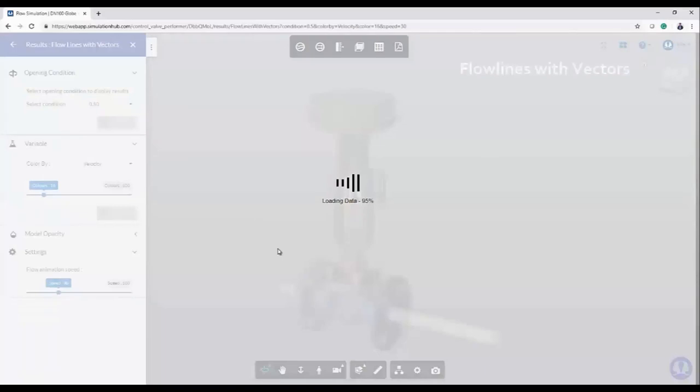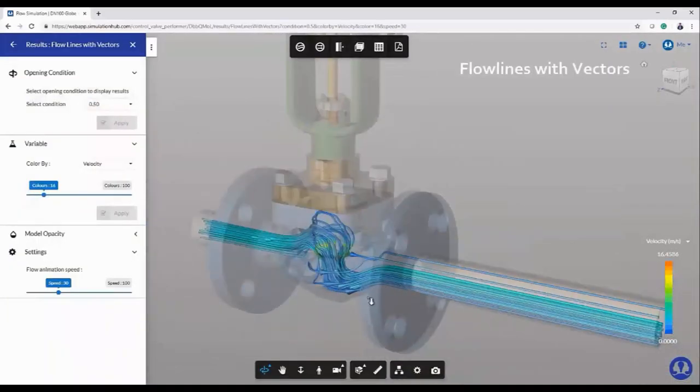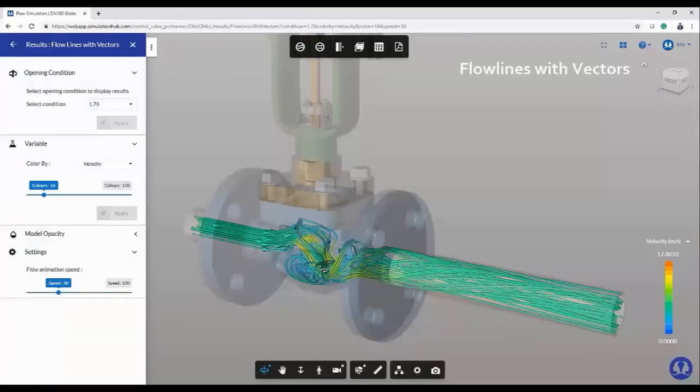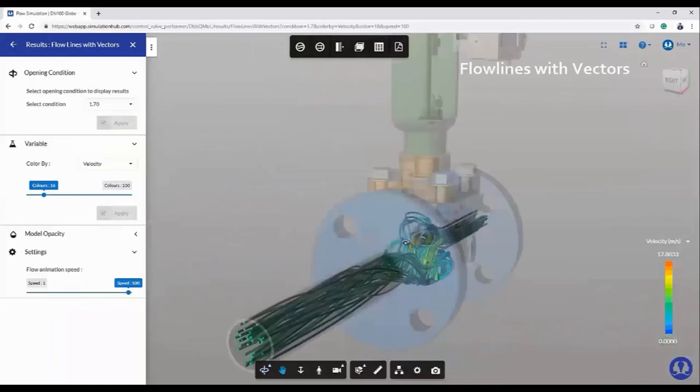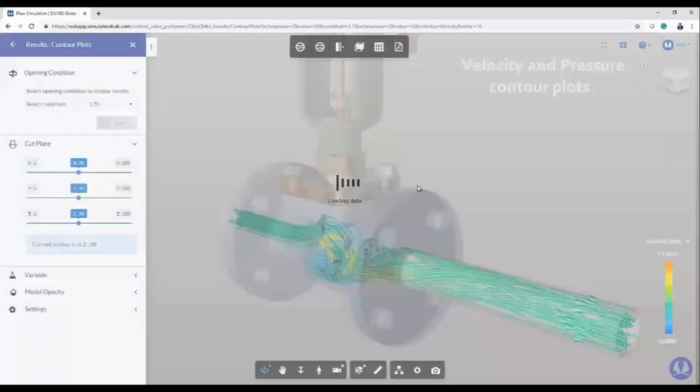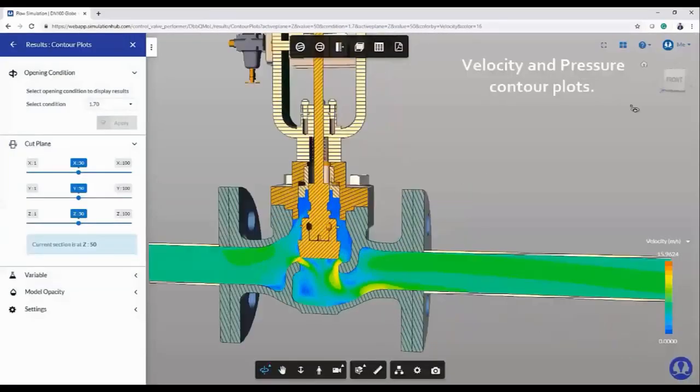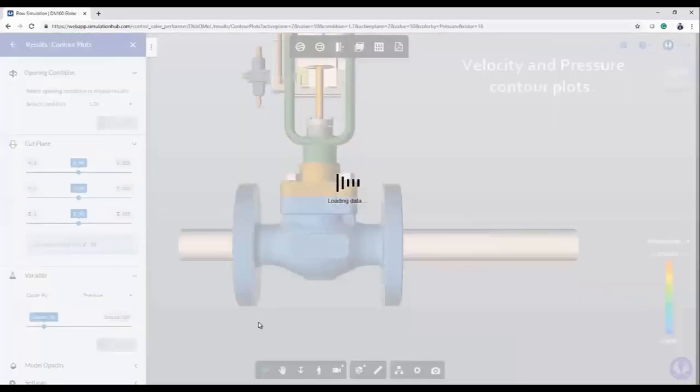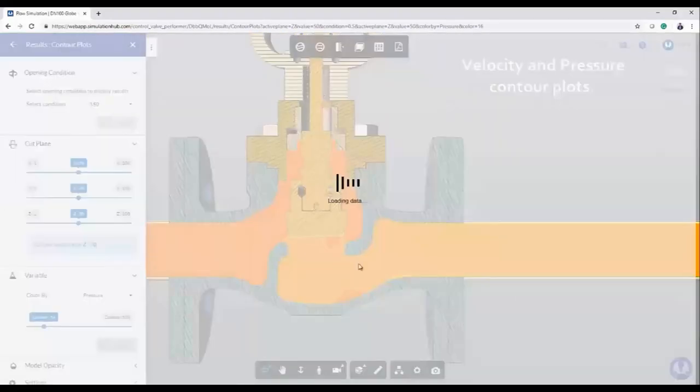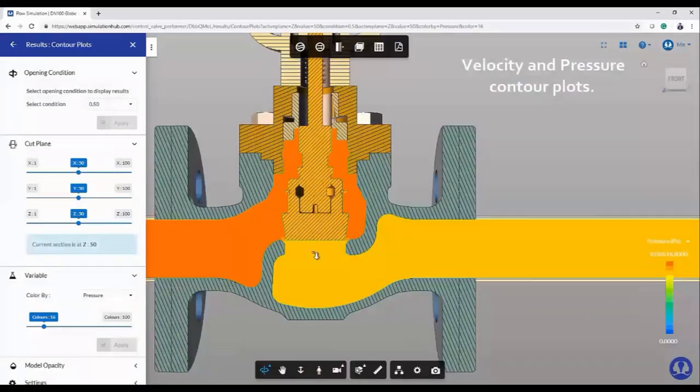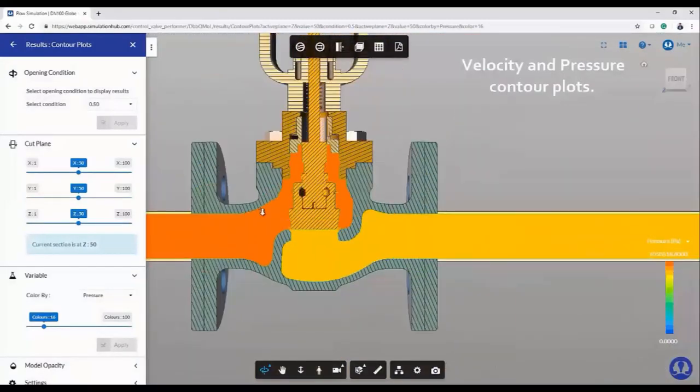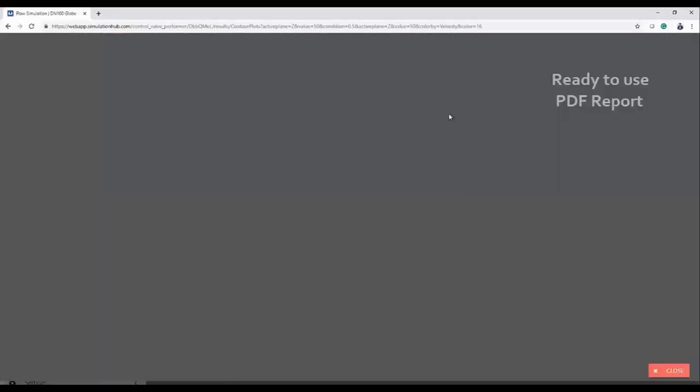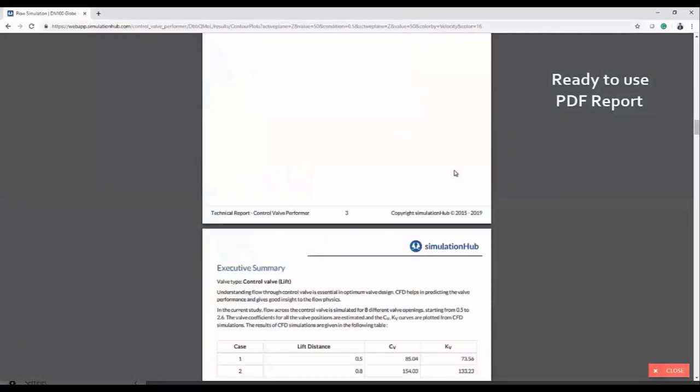I changed the opening condition and showing a more open condition results. Now more flow will pass in the valve. I'm representing the cut sections for the results. I can change the cut sections from velocity to pressure. These are the two types of properties we are displaying as results. So it's a complete repository of all the simulations inside a browser, and it's available forever with the user's account.